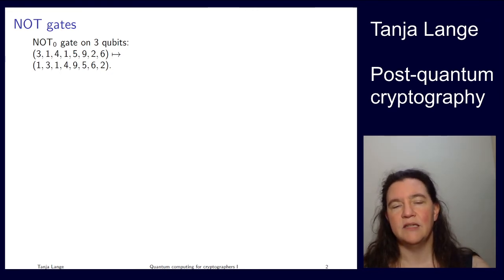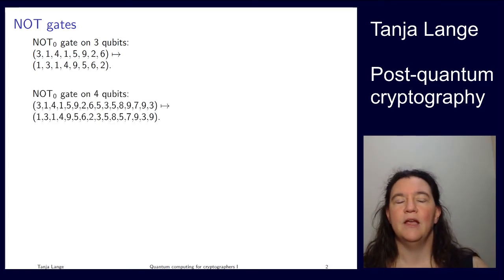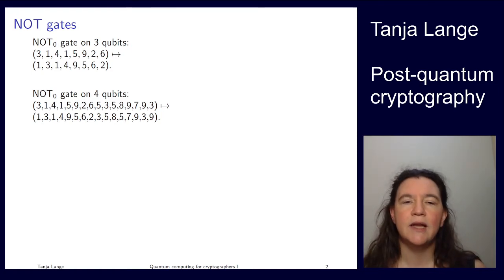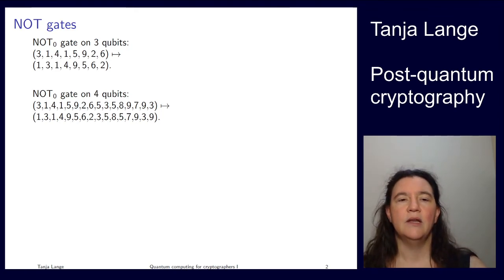The nice thing about the swap is, if you do it twice, it swaps back. If you do a NOT 0 on 4 qubits, the least significant bit, it's just swapping of adjacent pairs. It turns the even number into the odd number that is 1 larger, and it turns an odd number into the even number which is 1 smaller.